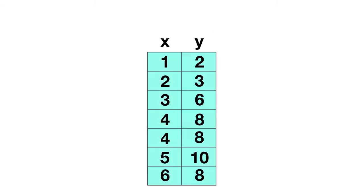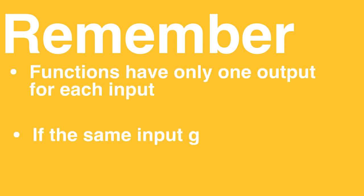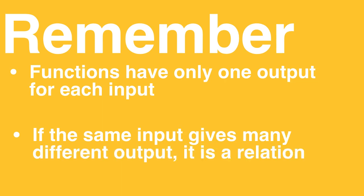Let's look at one more for today. Here's a table. Is this a function or a relation? We see the same input 4 is listed twice, but both times this 4 gives us an output of 8. You might also notice that you can get an output of 8 from an input of 6, but it doesn't matter that two different inputs give the same output. The problem is if one input gives many different outputs. So this table is still a function. From today remember: functions have only one output for each input, and if the same input gives many different outputs, it is called a relation.